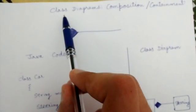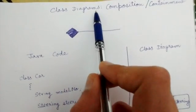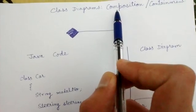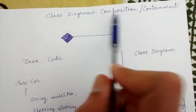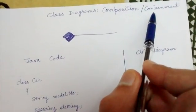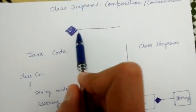Hello friends. In the last video lecture we looked at class diagrams aggregation, and in this lecture we will look at class diagrams composition or containment. These are two names for the same kind of relationship.